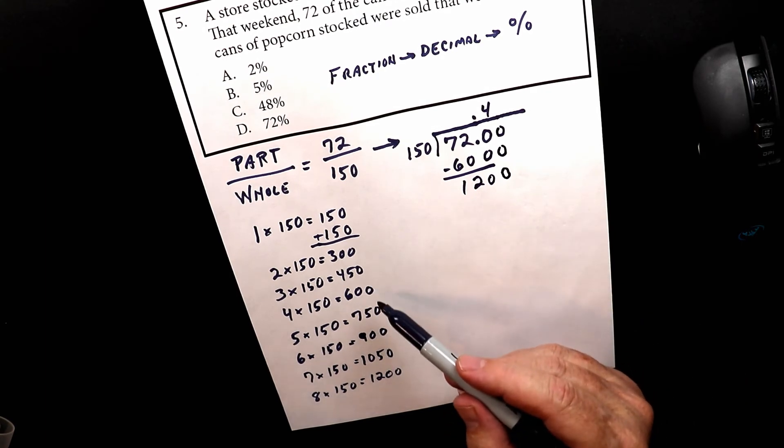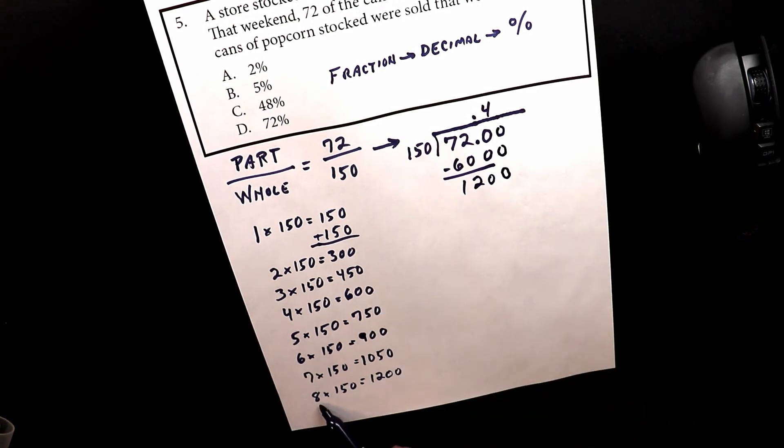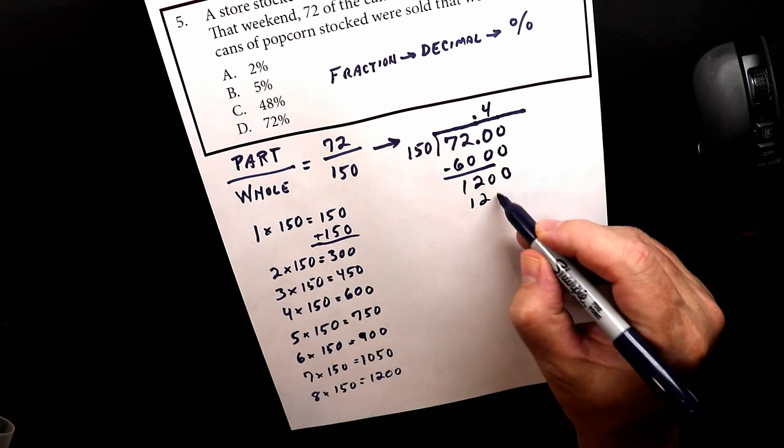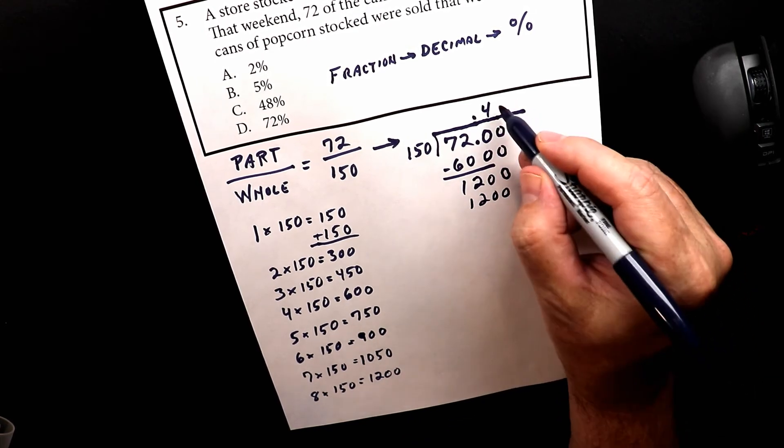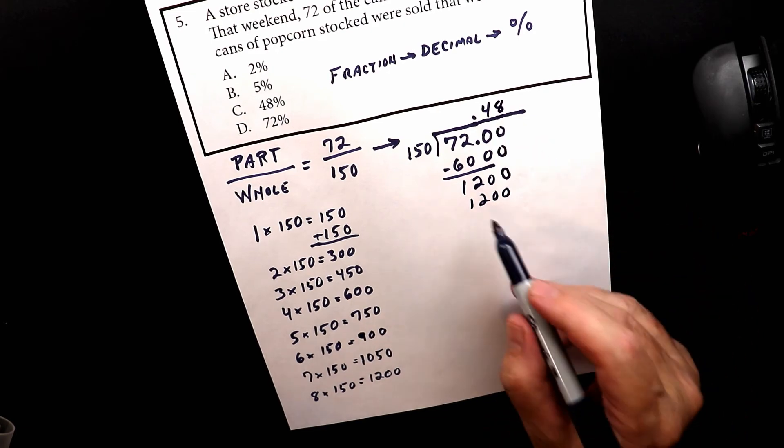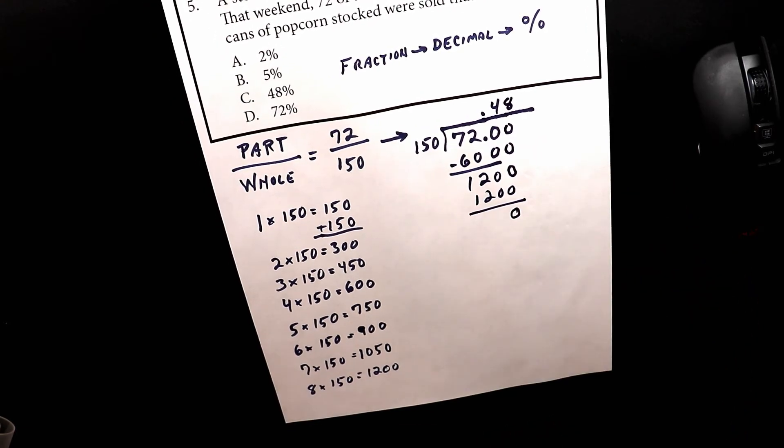And then I look down here and I say, oh look, it fits perfectly. 8×150 is 1,200. 1,200. And we're done, because there's zero remainder.